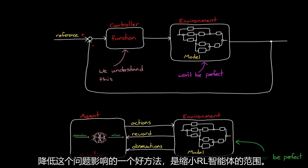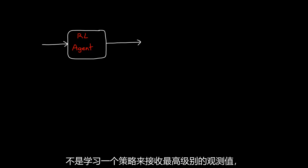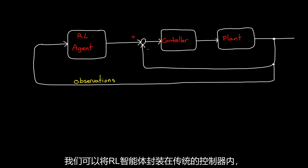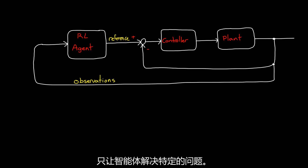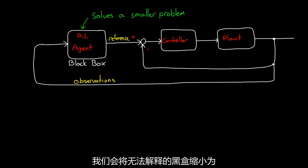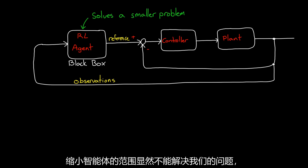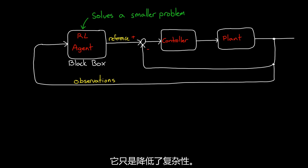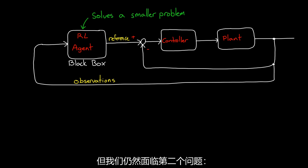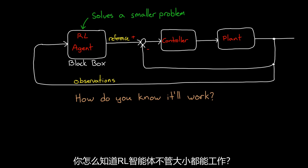A good way to reduce the scale of this problem is simply to narrow the scope of the RL agent. As I showed in the last video, rather than learn a policy that takes in the highest-level observations and commands the lowest-level actions, we can wrap traditional controllers around an RL agent so it solves only very specialized problems. By targeting a smaller problem with an RL agent, we shrink the unexplainable black box to just the parts of the system that are too difficult to solve with traditional methods. Shrinking the agent decreases its complexity and makes the policy more focused and easier to understand. However, even with this, we're still left with the second question: how do you know the RL agent will work, regardless of its size?